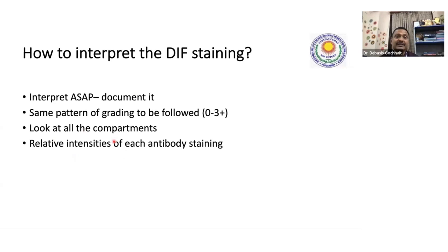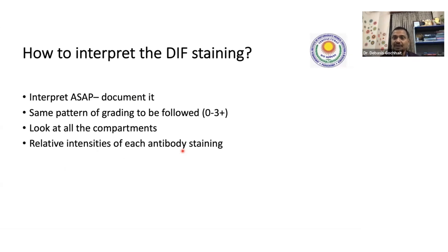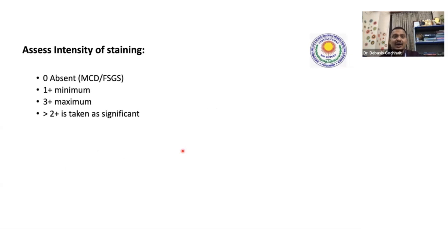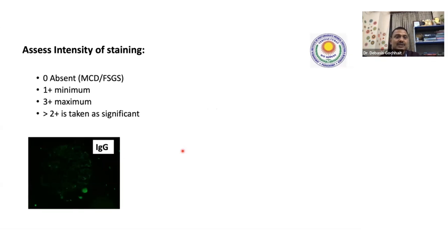Then note the relative intensities of each antibody. You have IgG, IgA, IgM and many stains — note which stain is brighter: which is 2+, which is 3+. All those have to be taken into account. We do intensity scoring from 0 to 3: 1+ is minimum, 3+ is maximum, and 0 is absent. In MCD and FSGS, we do not get any immunostaining.